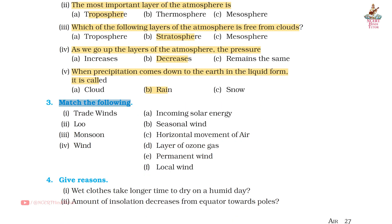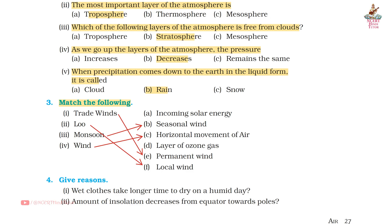Third exercise, match the following: First, trade winds — E. Permanent wind. Second, Loo — F. Local wind. Third, monsoon — B. Seasonal wind. Fourth, wind — C. Horizontal movement of air. Friends, you can note it down. Now let's move forward.